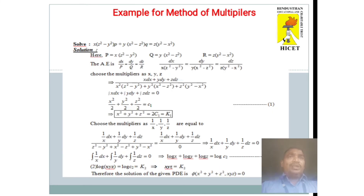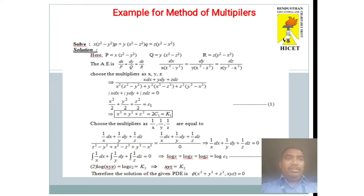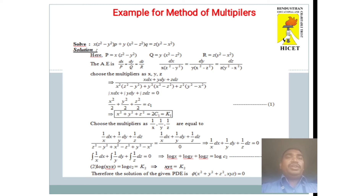This next example uses the method of multipliers. Solve x(z² − y²)p + y(x² − z²)q = z(y² − x²). We compare with Lagrange's linear equation to identify capital P, Q, and R. We write the auxiliary equations dx/P = dy/Q = dz/R, then choose multipliers x, y, z, multiply and sum to get x dx + y dy + z dz in the numerator over 0. Integrating gives the first solution: x² + y² + z² = constant.